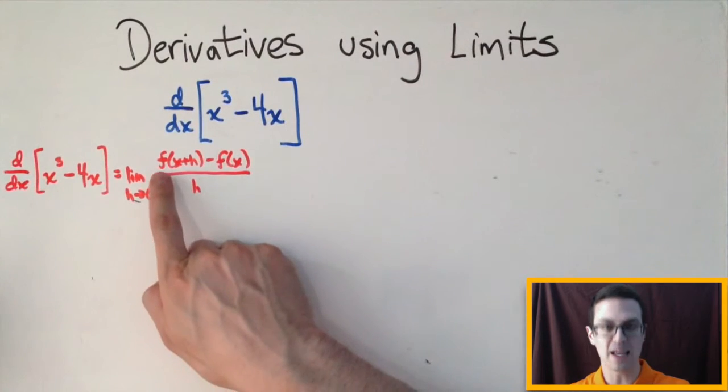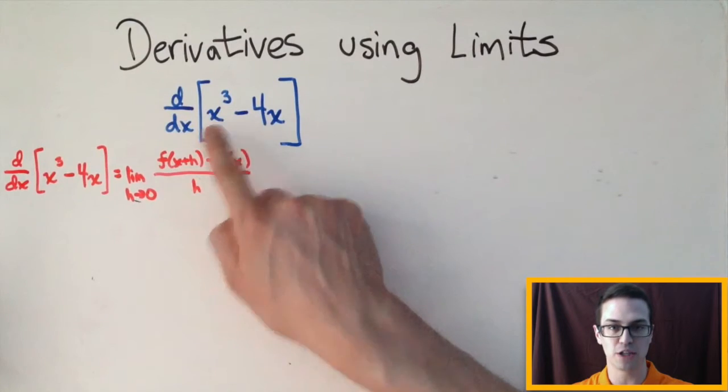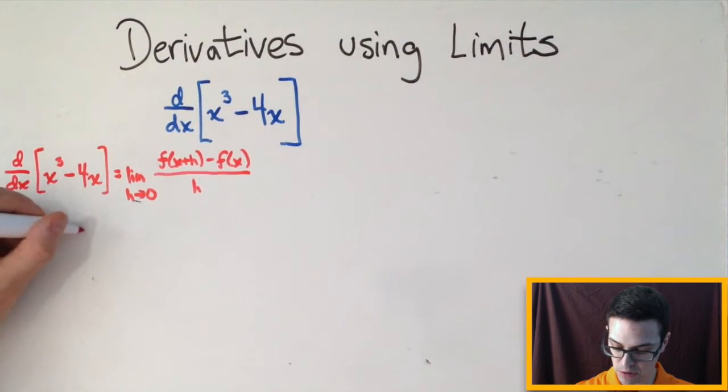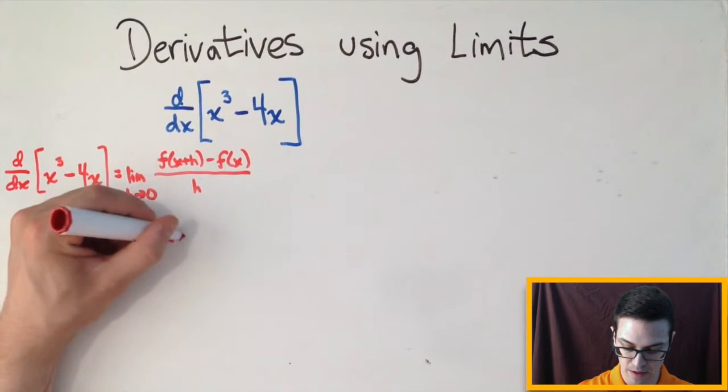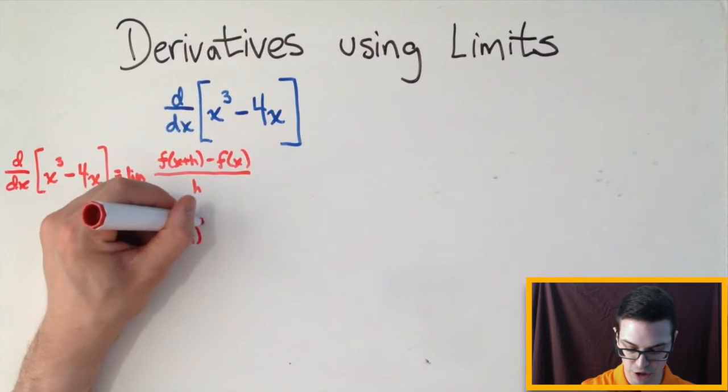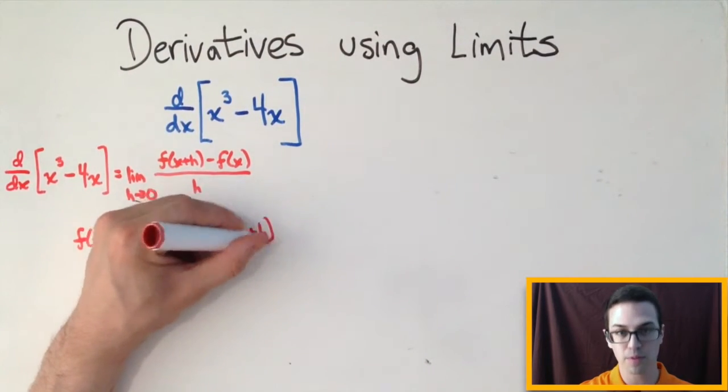Now in this case, f of x plus h, that would just be, I'm going to be substituting x plus h in for x up here. So f of x plus h would look something like this. It would be the quantity x plus h cubed minus 4 times the quantity x plus h.